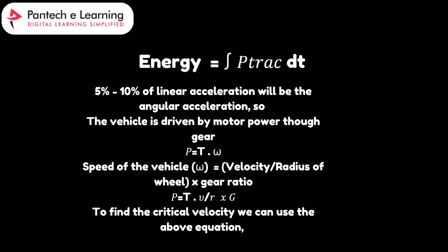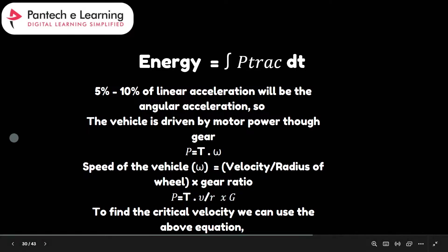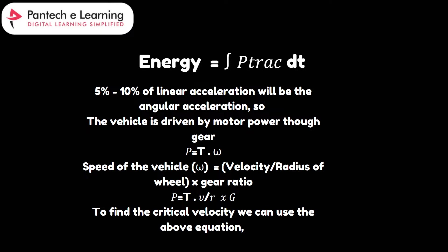Relating power to vehicle speed: the speed of the vehicle can be related to the angular velocity of the motor through the equation P equals T multiplied by velocity divided by R multiplied by G, where G is the gear ratio and R is the radius of the wheel. To find the critical velocity — the maximum speed at which the vehicle can operate without exceeding its limits — we use this formula to ensure the power generated by the motor is sufficient to propel the vehicle safely at maximum speed.